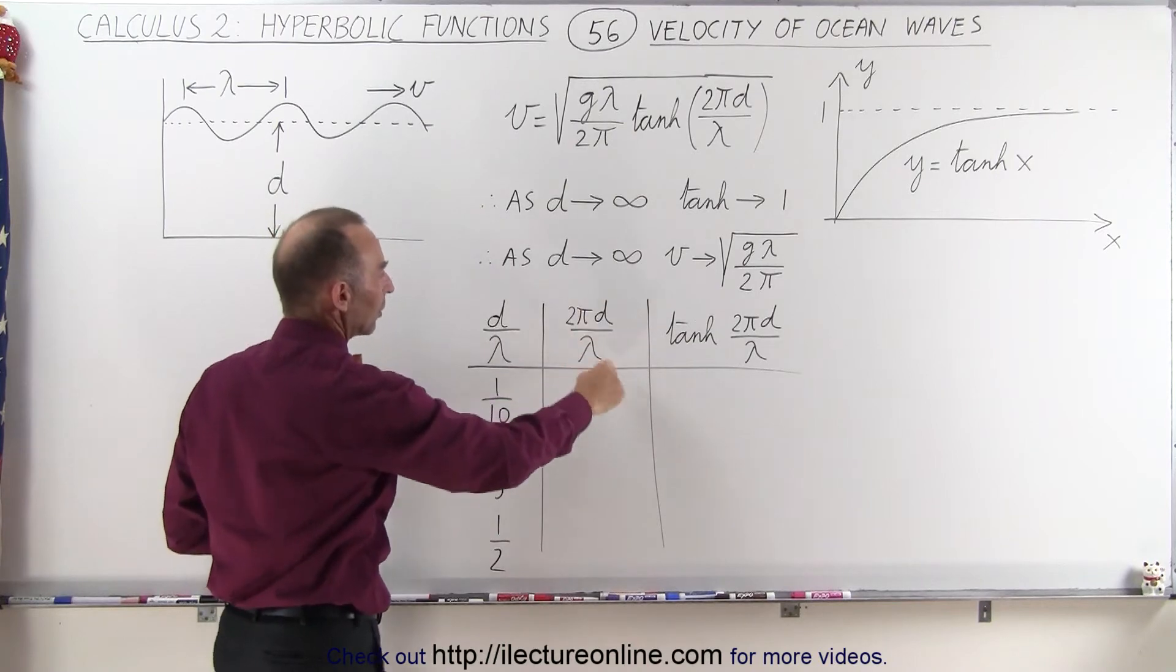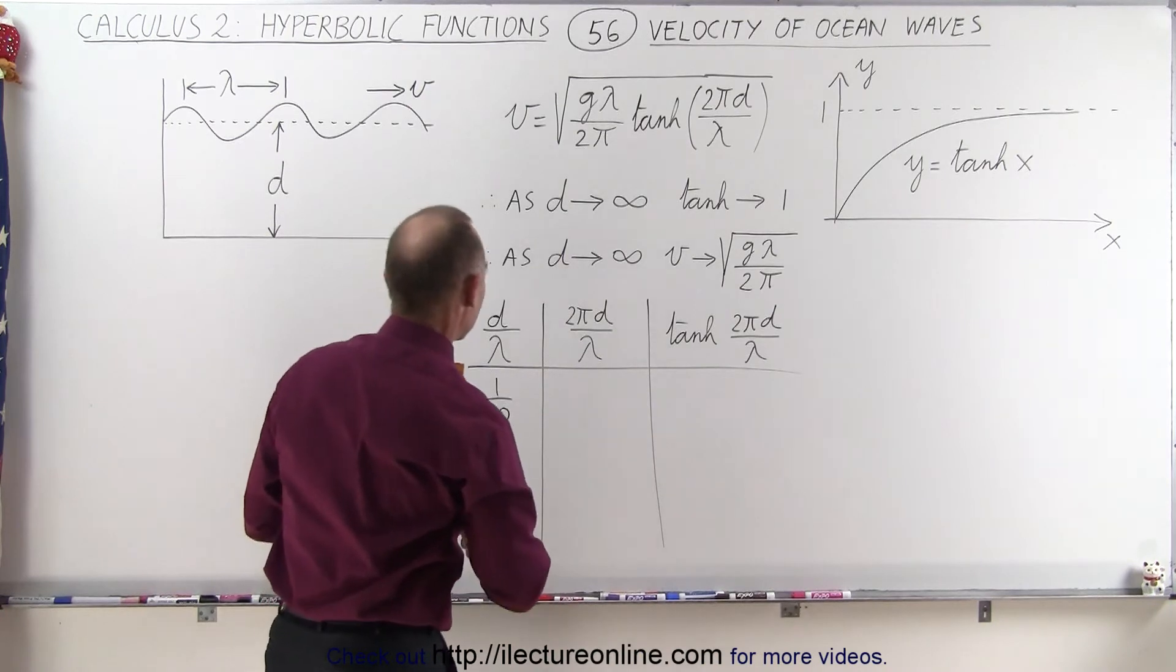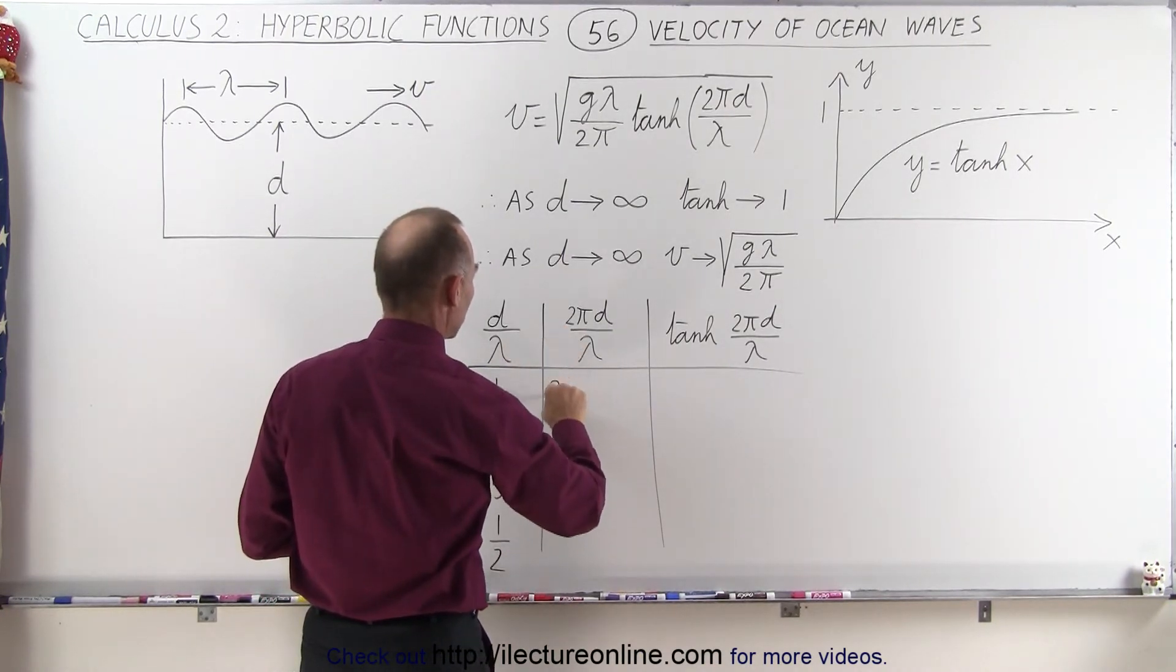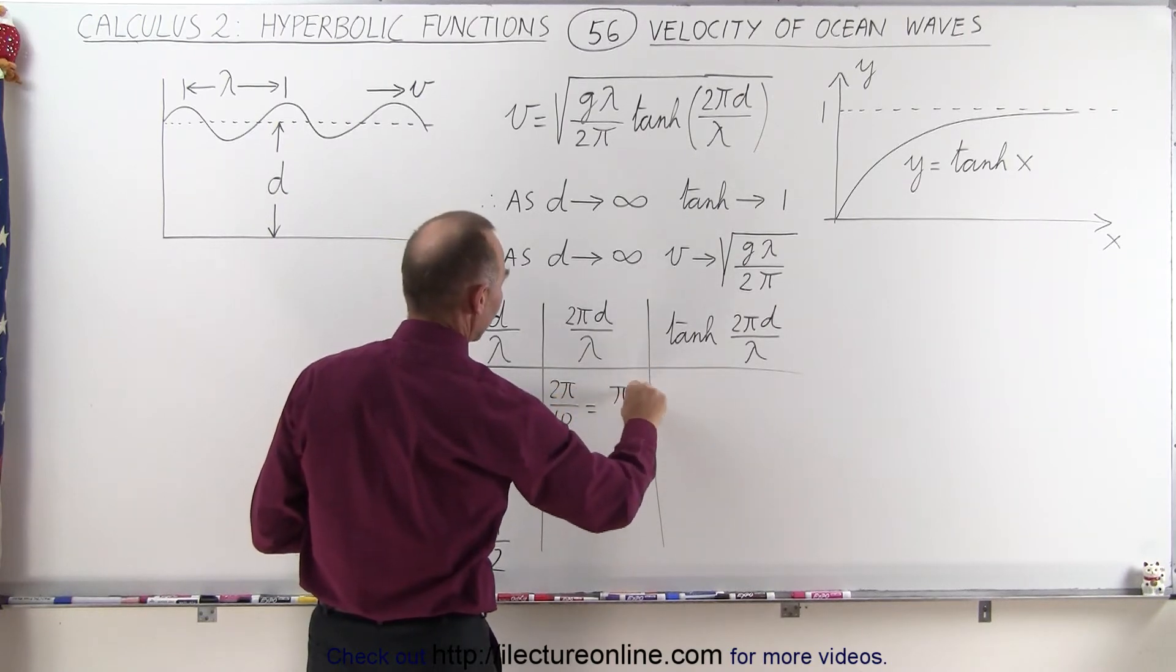If the depth is 1 tenth the wavelength, let's see what this is equal to. Now, of course, we'll need a calculator for that. Let's see, if this is 1 tenth times 2π, we get 2π divided by 10, which is equal to π divided by 5.